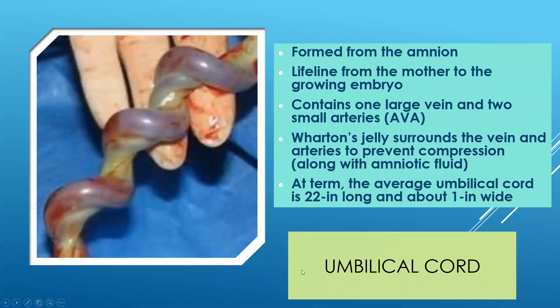Talking about the umbilical cord — it's an interesting part of that organ as well. It's the lifeline. It contains one large vein and two small arteries. I remember that with AVA — A-V-A — so two arteries, one vein. It is filled with Wharton's jelly, which is what keeps it from being compressed. This Wharton's jelly starts to harden as soon as it touches the air, which is why it will eventually dry up and fall off after the baby's born.